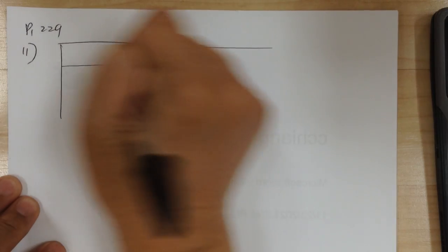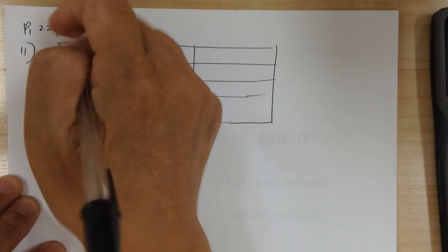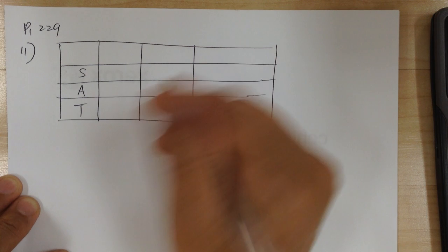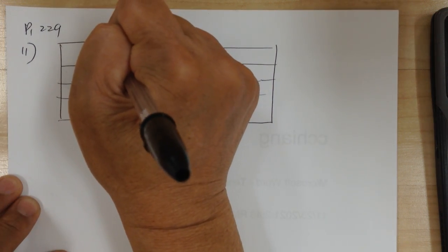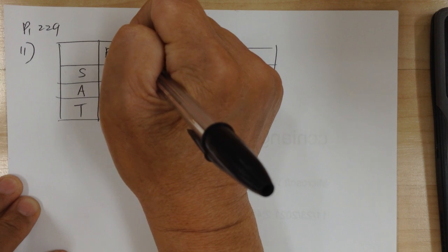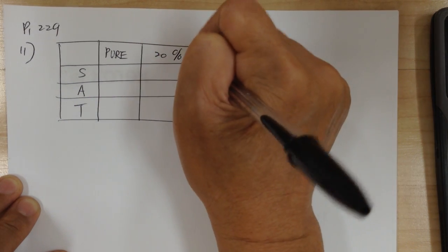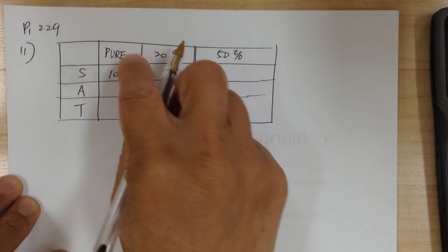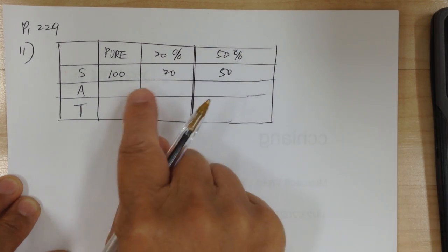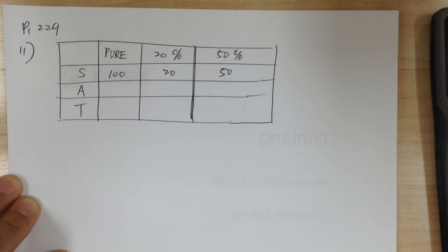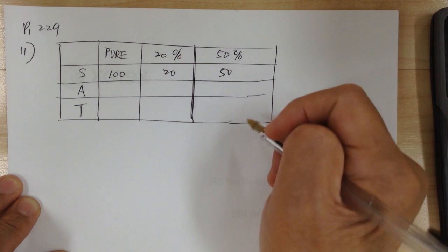Let's go to the next one. Read through — this is a mixture problem, make the table. S-A-T. Read through to see what you're mixing. We're mixing pure alcohol — pure alcohol added to a 20% solution to make it 50%. Pure alcohol is 100%; the strength of pure alcohol is 100%. The middle number is always over here — you got the high and the low, mix the high and the low to get the middle number. Whereas water is 0%, pure alcohol is 100%.